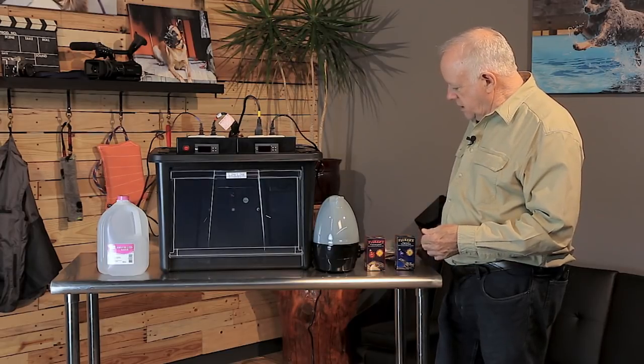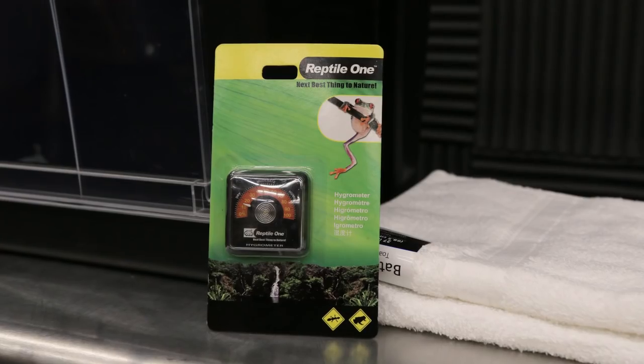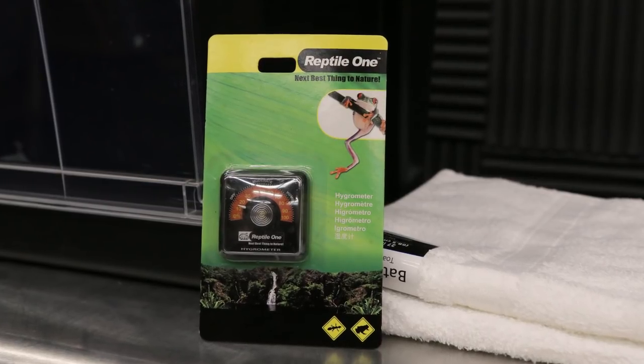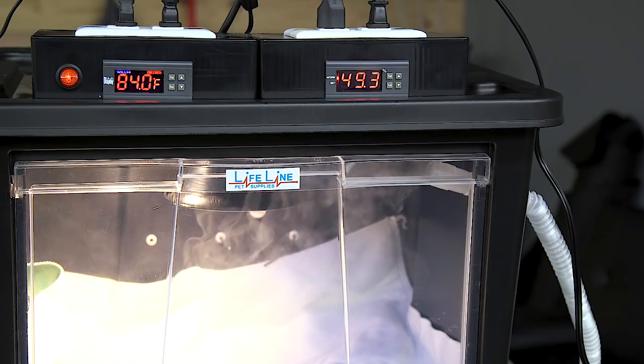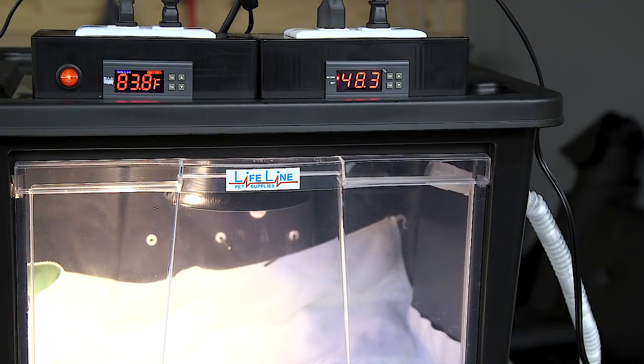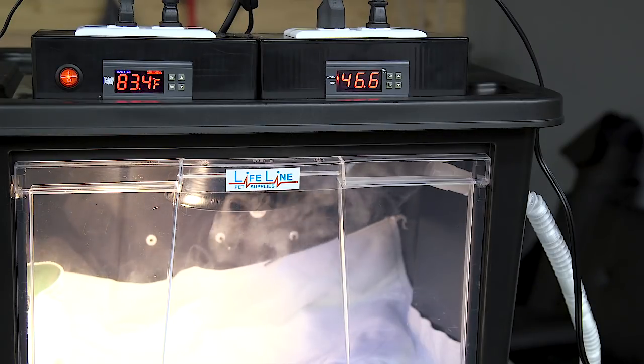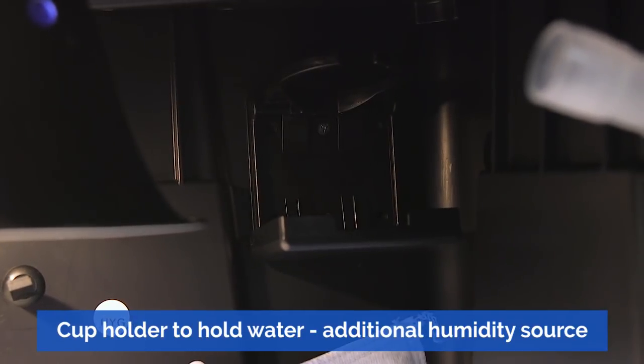It comes with a hydrometer. The system is set up, when it comes, to keep the humidity inside your incubator at 50 percent. It comes with an extra hydrometer to just back up the settings that you have here so you know that it's all accurate. So now, let's talk about how we put it all together.